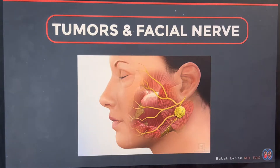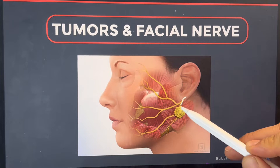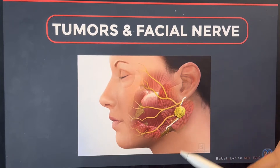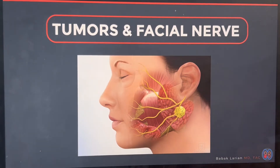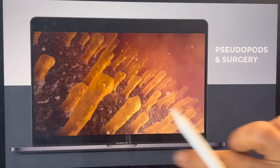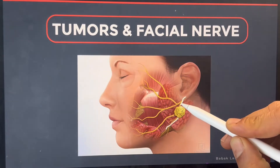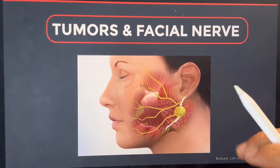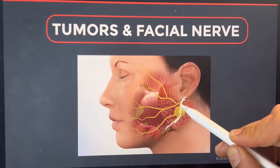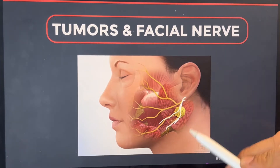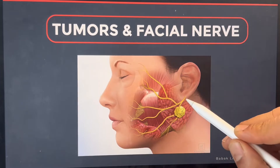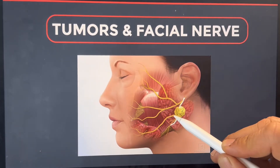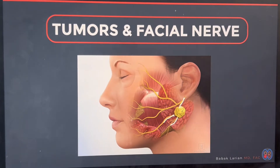Tumors in the parotid can be superficial to the facial nerve, with the tumor sitting superficial to it, or they can be deep to the facial nerve with the nerve going over it. Or the tumor can wrap around it entirely, where all you see is the nerve going into the tumor and branches coming out from the other side.